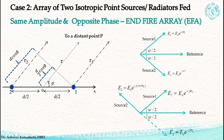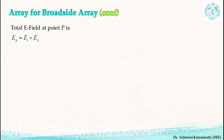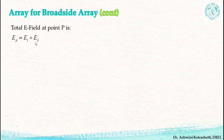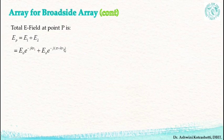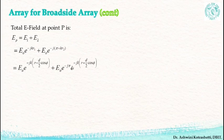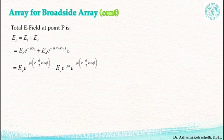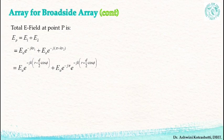Now let us find the total electric field at the distant point P. The total field is given by EP = E1 + E2, where E1 is the field due to source 1 and E2 is the field due to source 2. E1 is given by E0 e raised to −jkr1 and E2 is given by E0 e raised to −j(π + kr2), introducing the 180-degree phase shift at source 2. I will separate e raised to −jπ outside and then substitute the far-field approximations in r1 and r2, which remain the same as in Case 1.